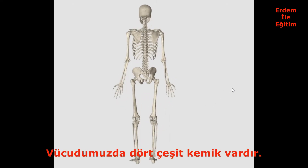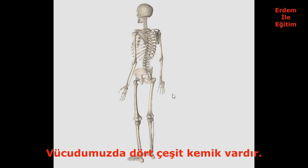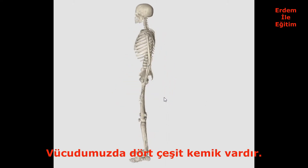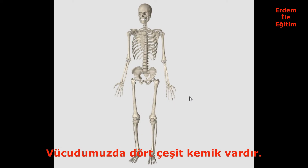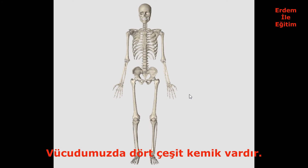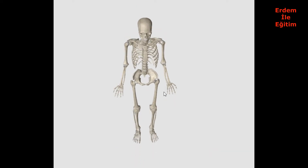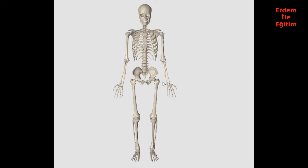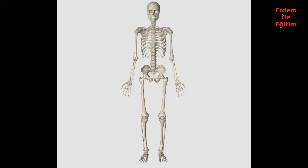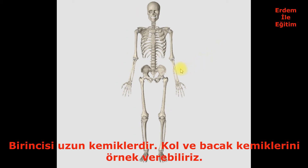There are four types of bones in our body. The first are long bones. We can give examples of arm and leg bones.